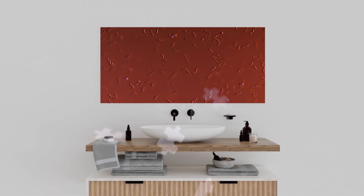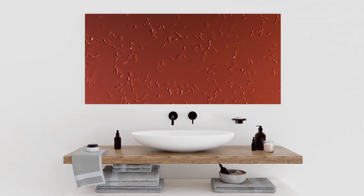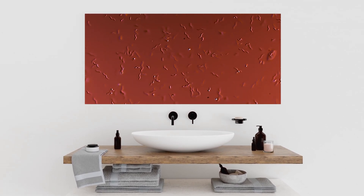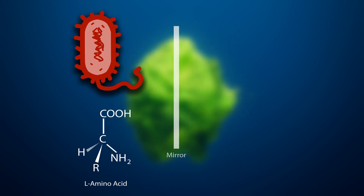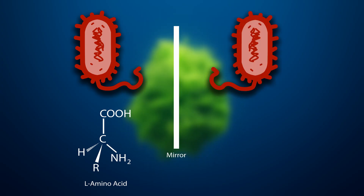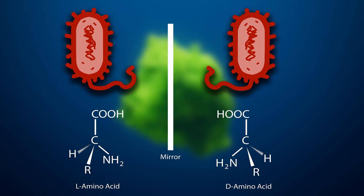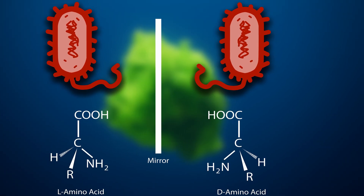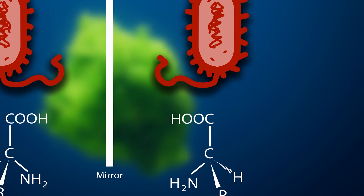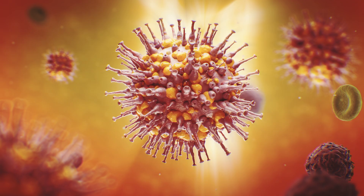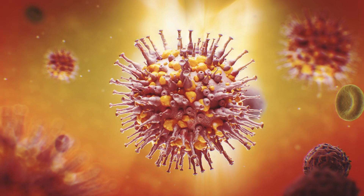Mirrored bacteria, or mirror image microbes, take the concept of chirality one step further. Instead of using the usual left-handed amino acids, they would be built from the right-handed versions — D-amino acids instead of L — and so on. The result? A bacterium that looks familiar but is made of reversed molecular building blocks, making it effectively invisible to viruses and enzymes designed to attack the standard version.